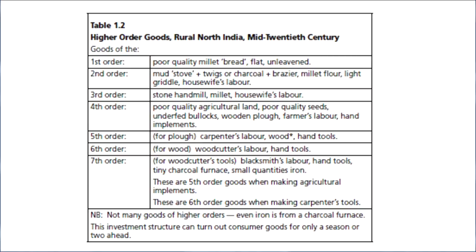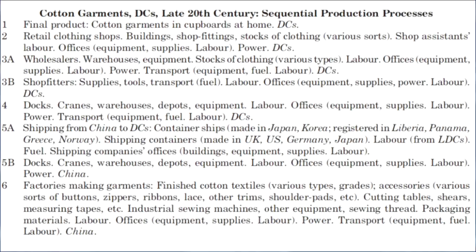These charts of orders are from a book by Sudha Shenoy, available on Mises.org — I believe it's called An Outline for International Economic History. The whole book develops and applies the notion of a vertical division of labor to analyze different growth episodes, especially that of England. Another example is late 20th-century cotton garments in developed countries. You can see how many different orders and different capital goods go into creating that final product available when you walk into a store — some goods made in the UK, US, Germany, Japan, China — it's an international process.